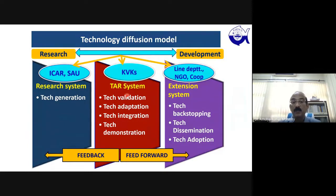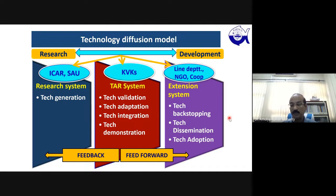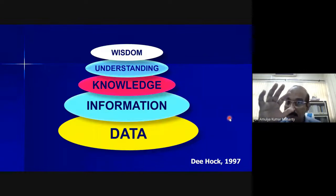The technology diffusion model shows: research system for technology generation; KVK for validation, adaptation, integration, and demonstration; then line departments and NGOs for technology backstopping, dissemination, and adoption. The feedback and feed-forward process is always present — when technology doesn't work in the field, it goes back through the feedback system to the research system for refinement, then back to KVK, and if it performs well it moves to the line departments.